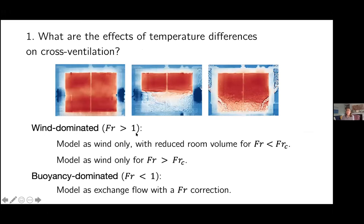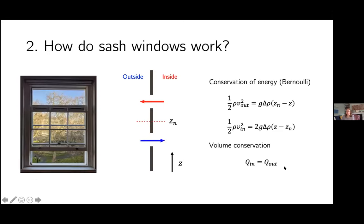That's the end of the first model on the effects of temperature differences on cross ventilation. There are two regimes: wind-dominated, where the flow rate Q doesn't really change but you get stratification and an effectively reduced room volume; and buoyancy-dominated, where you model it as exchange flow with a Froude number correction. I'll now briefly discuss sash windows — they're very common, and this is more recent work I've been doing with Gail and Paul.